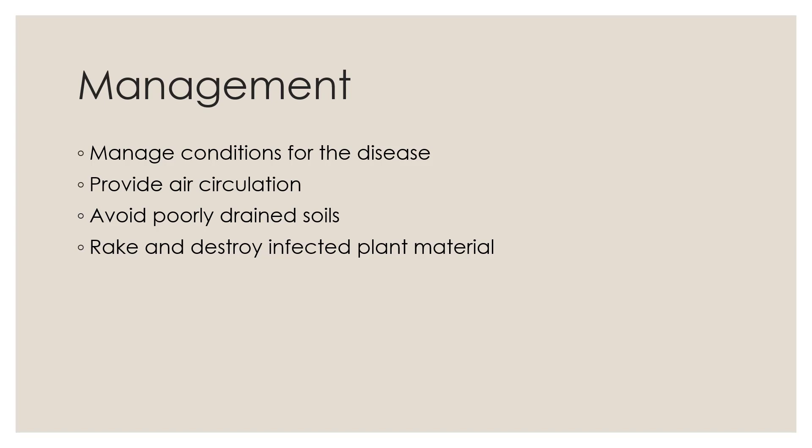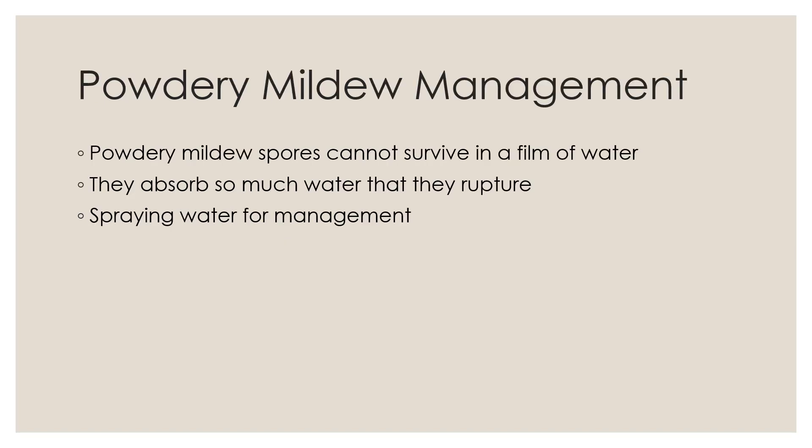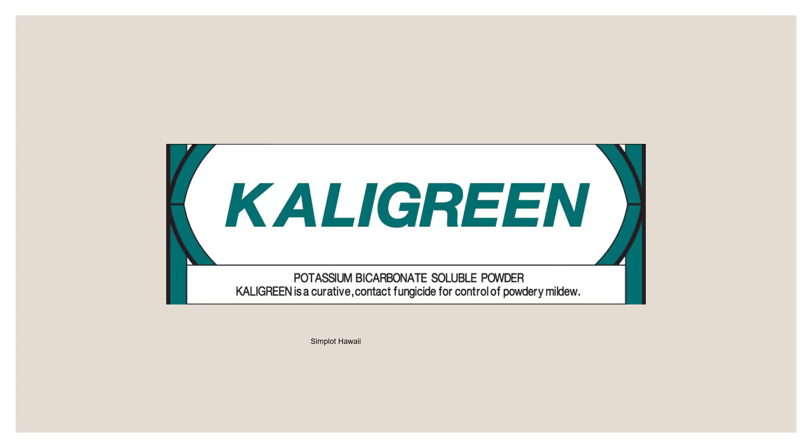Manage powdery mildew by improving air circulation, avoiding poorly drained soils, and raking and destroying infected plant material to prevent reinfection. Powdery mildew spores actually rupture when they absorb too much water, so water can be used as a management tool. It's also one of the few fungal pathogens that can be cured with products — a Cornell recipe using baking soda is a minimum-risk pesticide that will actually cure powdery mildew.